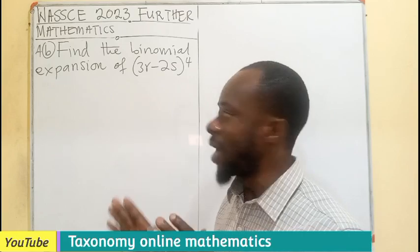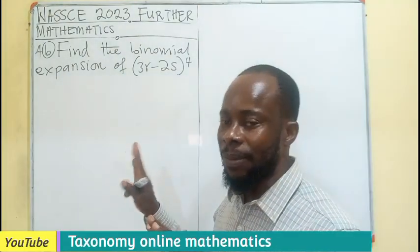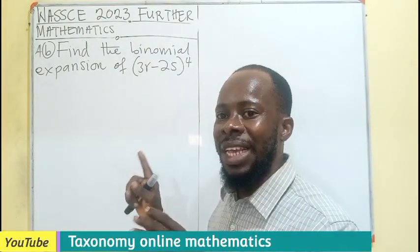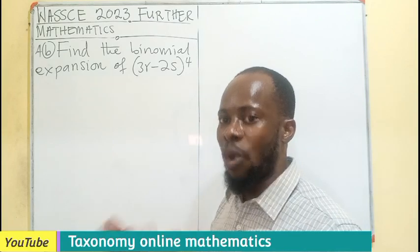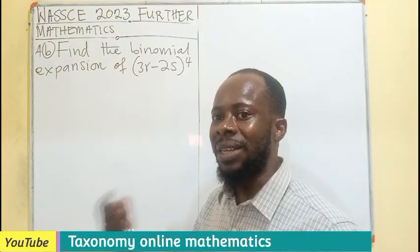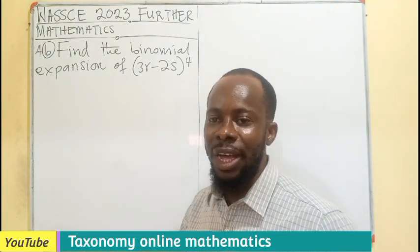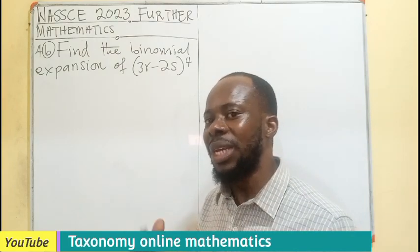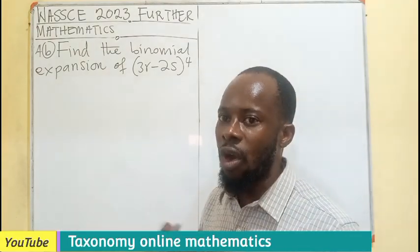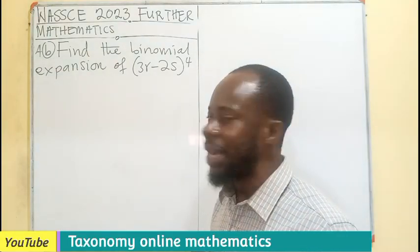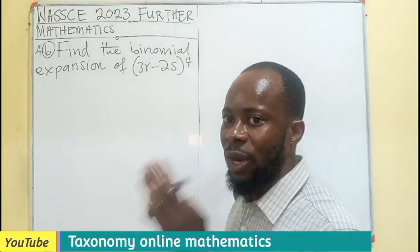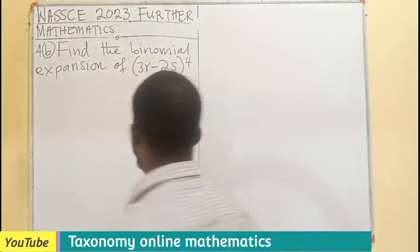Under binomial expansion, we can use three methods to arrive at an answer: either by using the normal binomial expansion method, using the Pascal triangle, or even using the combination method. I'll try and use two of the methods in this video, beginning with the binomial expansion.